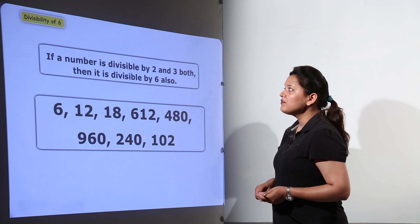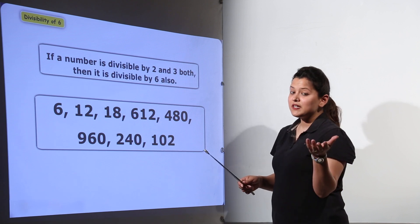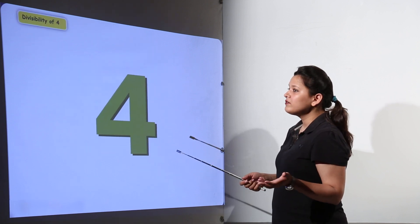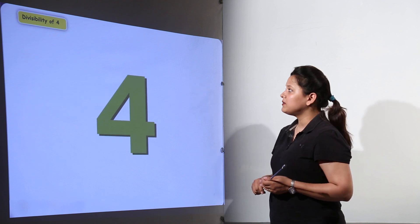For divisibility by 5, you can again check the units place. If it is divisible by 5, then the whole number would be divisible by 5.